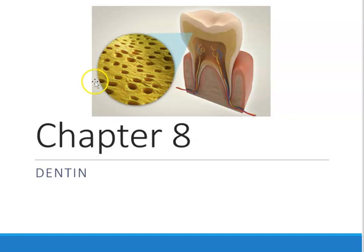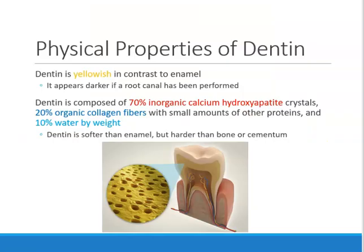Dentin is yellow and it has these tubules. It actually looks like a tube — so it's like a tubule. This is just a cross section, but it does extend, it does go down. When we're looking at the dentin, we know it is yellow, especially if you compare it to enamel, which is white.